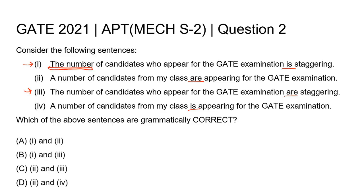The sentence says: 'The number of candidates who appear for the GATE examination is staggering.' The number of candidates can be 5000, 3000, or 6000, but 'the number' as a subject is singular because the subject of this sentence is 'the number', not 'the candidates'. That's why we use 'is' with this singular subject.